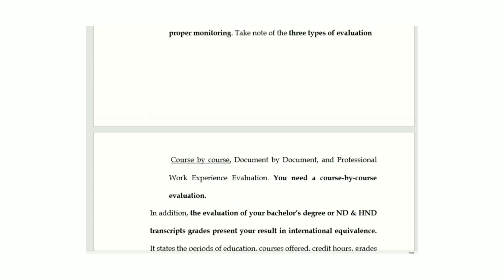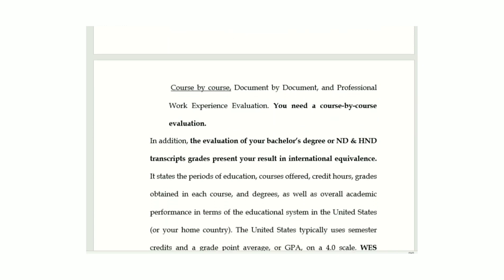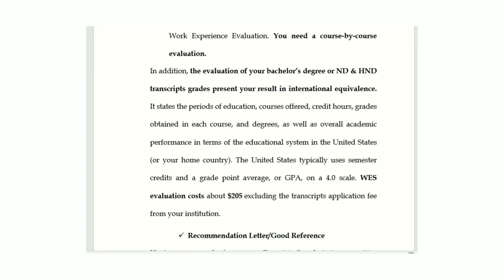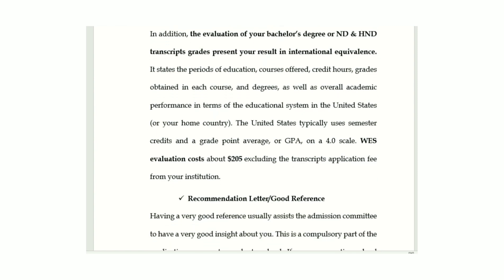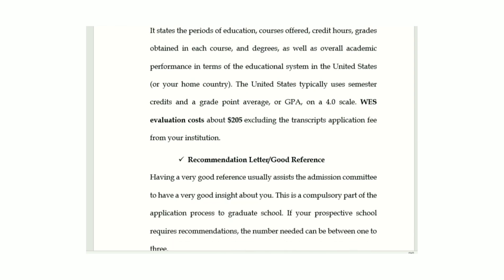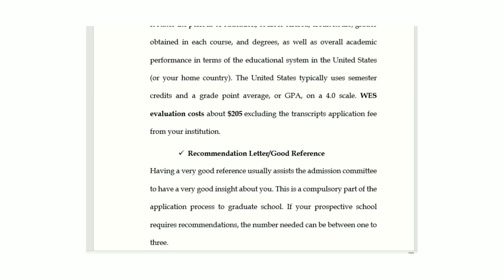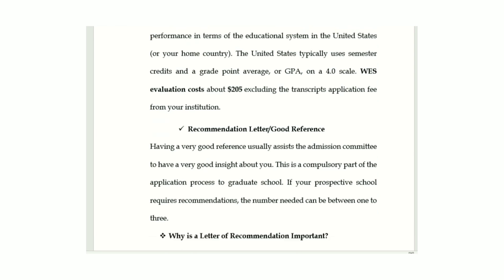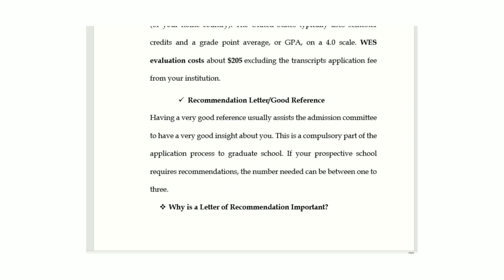The types of WES evaluation are: course-by-course evaluation, document-by-document evaluation, and professional experience evaluation. For scholarship or school application you need course-by-course evaluation. The school will send all your grades, stating the period, credit hours, grades obtained in those courses, and overall academic performance. The United States typically uses semester credits and GPA on a scale of 4.0. The cost of WES evaluation is around $205, not inclusive of your transcript application fee from your institution.